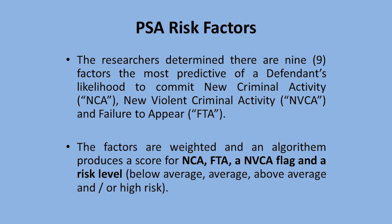They ultimately determined that there are nine risk factors most predictive of these behaviors. The PSA measures three outcomes: new criminal activity (NCA), new violent criminal activity (NVCA), and failure to appear (FTA). The factors are weighted and they've created an algorithm which produces a score for each of these outcomes and a risk level. Risk levels are broken down into below average risk, average risk, above average risk, and high risk.